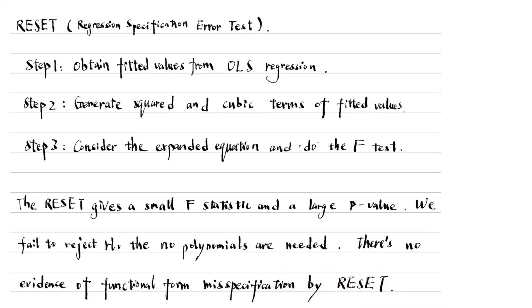The difference in the F-statistics between the OVtest command and the manual procedure is due to the OVtest command adding one more term, the fitted values to the 4th power.